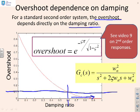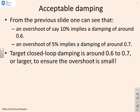For more detail, see video 9 in the second-order responses series. An overshoot of about 10% gives a damping of about 0.6, and 5% gives about 0.7.